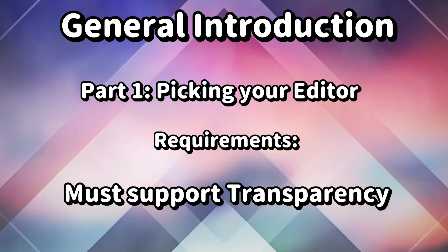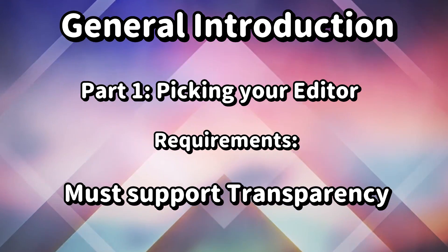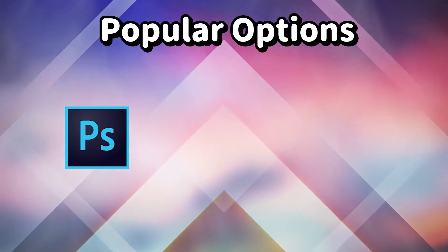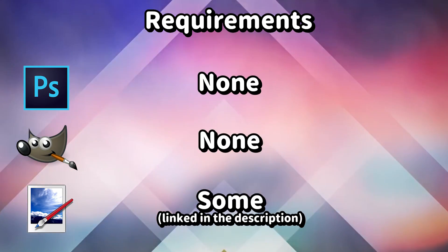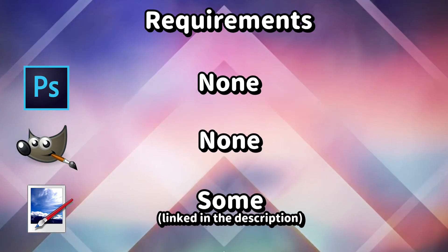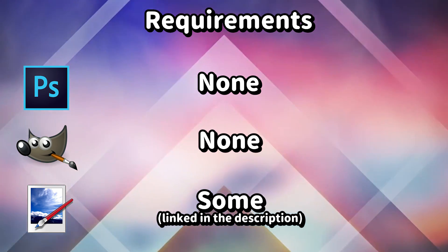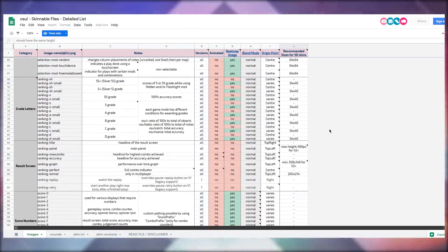Let's begin with the general introduction. To begin skinning you're going to need an editor. This can be done with absolutely anything as long as it supports transparency. Some popular options are Photoshop, GIMP, and Paint.net — the latter two are free. It really doesn't matter which one you choose as it's all preference, but if you're going to go with Paint.net you're going to need some plugins that you can find in the description below. Once you've got your editor, go ahead and take a look at the skinnable files list linked in the description below.